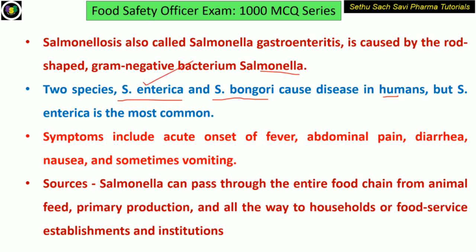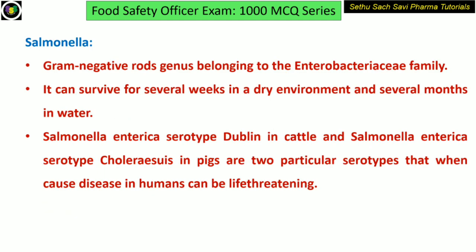The symptoms include acute onset of fever, abdominal pain, diarrhea, nausea, and vomiting. Coming to the sources, Salmonella is mainly obtained from the food chain — it passes through the food chain. Salmonella is a gram-negative rods genus belonging to the family Enterobacteriaceae.